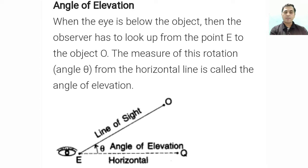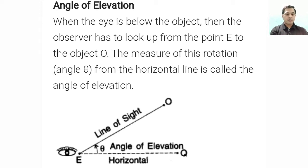Next is angle of elevation. When the eye is below the object, the observer looks up from point E to object O. The measure of this rotation angle theta from the horizontal line is called the angle of elevation. So the angle of elevation is formed between the line of sight and the horizontal line, with the observer down and the object at a particular height.